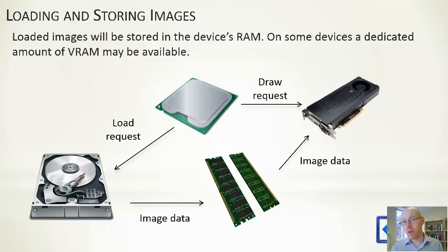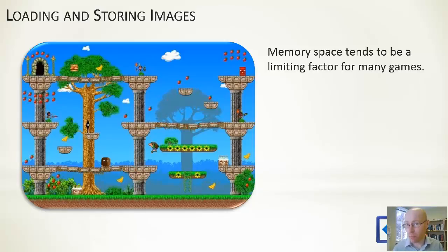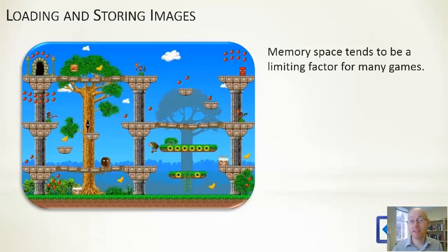Once we've loaded something in and we draw it, quite a lot of devices have a separate piece of silicon which handles drawing. We send a request off to it, and effectively that piece of silicon copies the data from memory to another bit of memory which replicates what is displayed on the screen. Images are actually quite memory-intensive — when stored on disk they're often heavily compressed, but when loaded into memory in an uncompressed format they take up a surprisingly large amount of space.